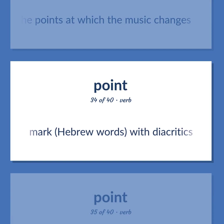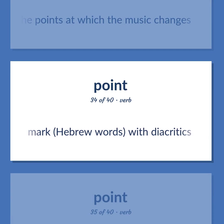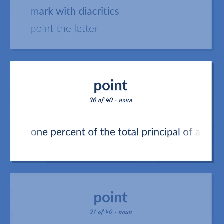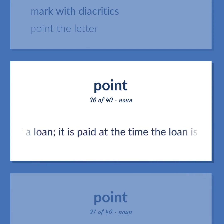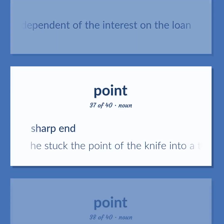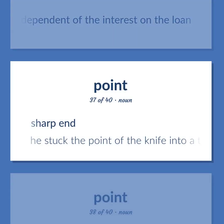Mark Hebrew words with diacritics. Mark with diacritics — point the letter. 1% of the total principal of a loan; it is paid at the time the loan is made and is independent of the interest on the loan. Sharp end — he stuck the point of the knife into a tree.